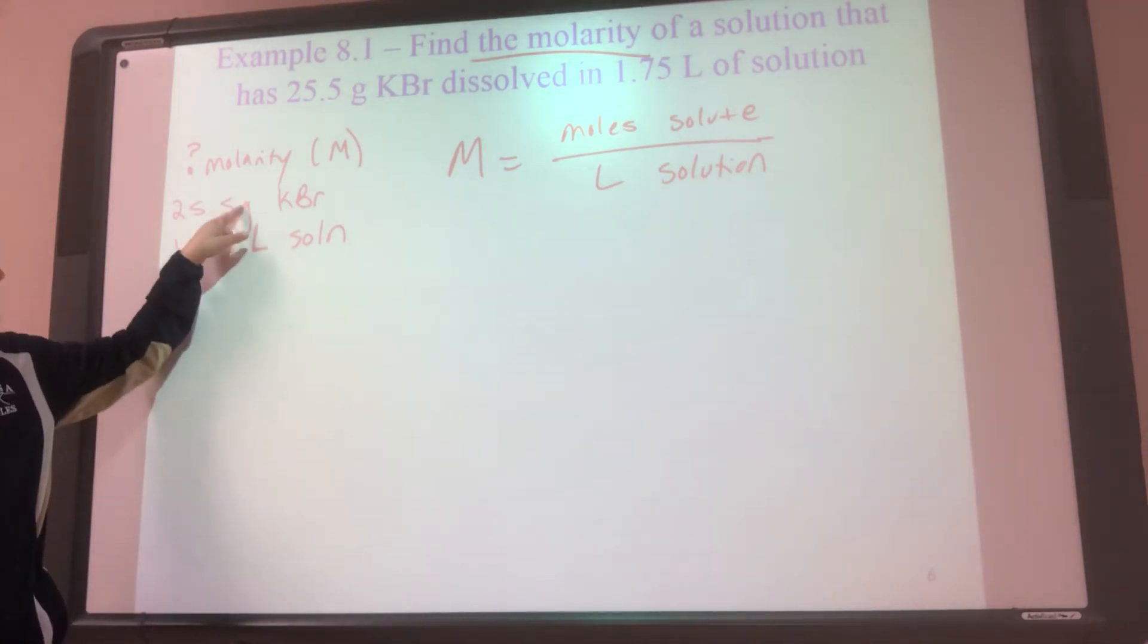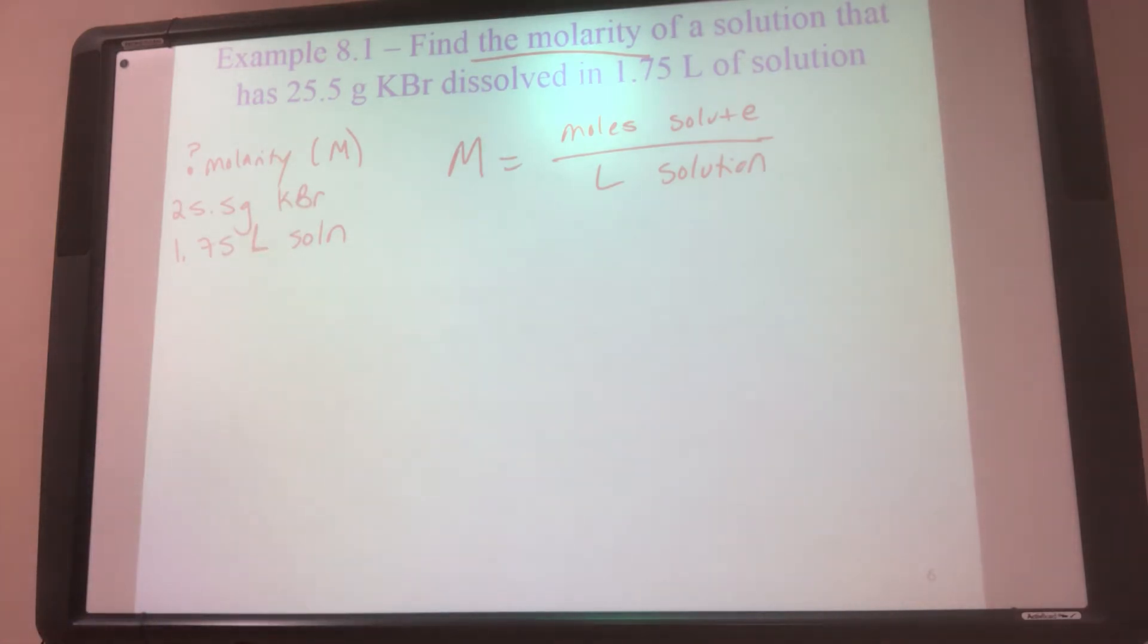So I need the KBR not in grams, but in moles. So if I have 25.5 grams of KBR, I don't want grams, I want moles. So I can go from grams of KBR to moles of KBR. How do I go from grams to moles? Periodic table. So find the mass of potassium, find the mass of bromine, add it up, and you get 119, top or bottom? Bottom. And this should be old hat for you at this point. You should be really used to doing this from the very beginning of the semester.